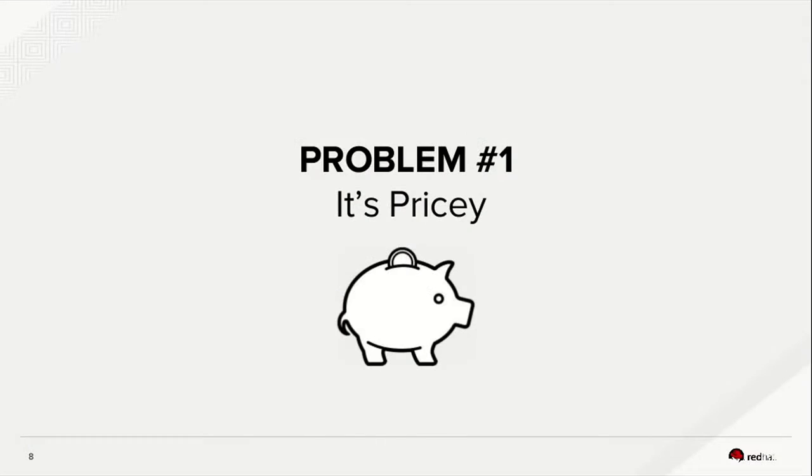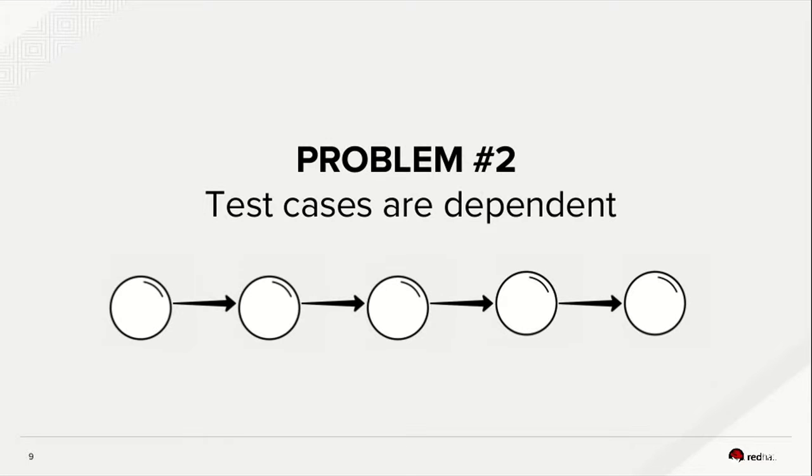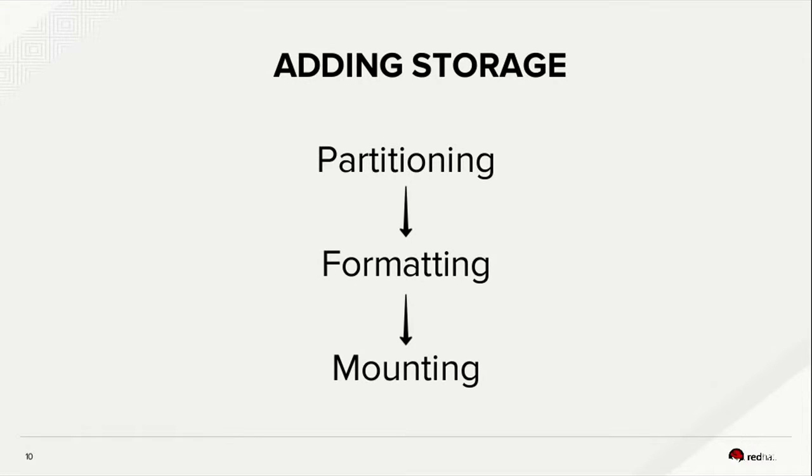Here the first problem comes: we can't launch that many instances to run all our test cases in parallel — it's simply expensive, even for a company which makes $2 billion in revenue. The second problem is dependencies. Test cases are dependent. For example, if I want to add storage in RHEL, I need to first partition my disks, format them in some desired file system type, then mount them, update the fstab file, and so on. I can't run those dependent test cases in parallel. So we have two problems: it's expensive and our test cases are dependent.